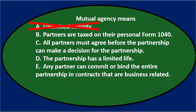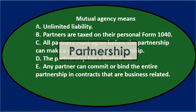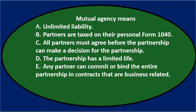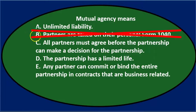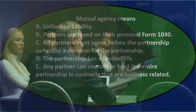A general partnership has unlimited liability, but not necessarily as a result of mutual agency — that could exaggerate the problem, so I'm going to cross that out. B says partners are taxed on their personal form 1040 — in a partnership that's typically true, it's a flow-through entity, but it has nothing to do with the agency issue. That's a partnership characteristic but not what we're looking for.